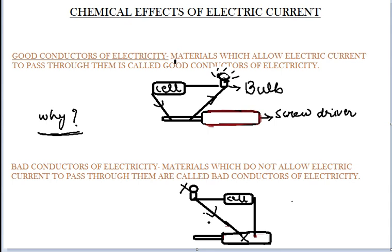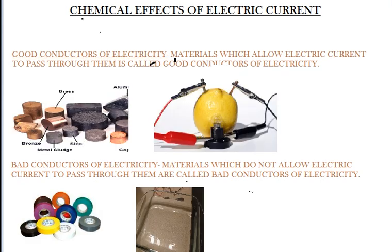Now we will see some examples of good conductors and bad conductors of electricity in our day-to-day life. Some examples of good conductors of electricity are brass, bronze, metal, steel, copper, aluminium, etc.